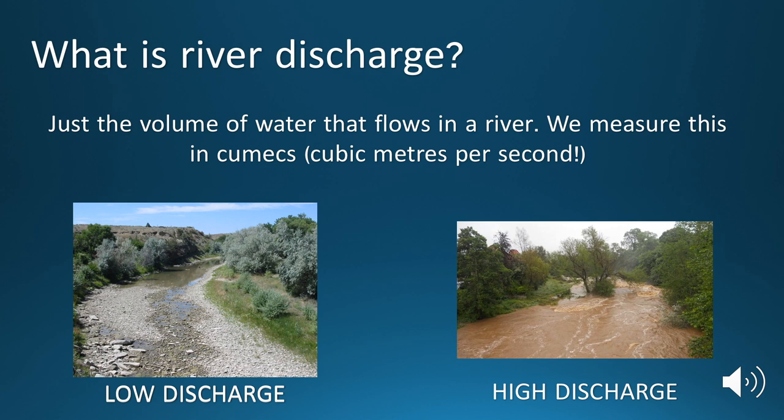Whereas if you've got a small number of cubic metres flowing past you per second, then there may not be as much water within the river channel at a given time. But this all depends on the river channel in particular that you're assessing or looking at. What we can do is show you two images to give you a visual representation of what we mean by low and high discharge.